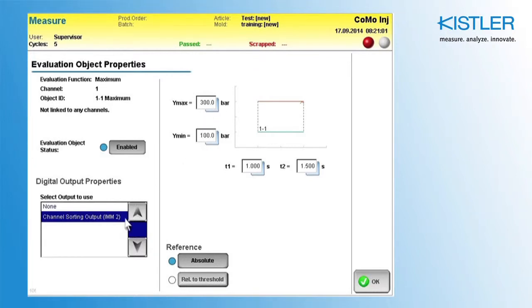Here we have chosen the sorting output. In this example, only one sorting output is available, because Channel 1 is linked to the sorting output IMM2. There is a separate video tutorial that explains how to define sorting outputs.